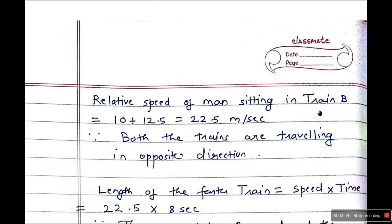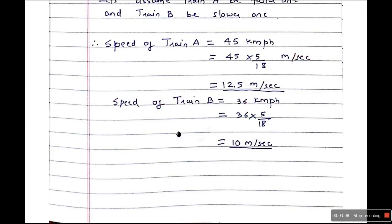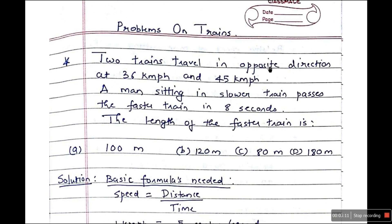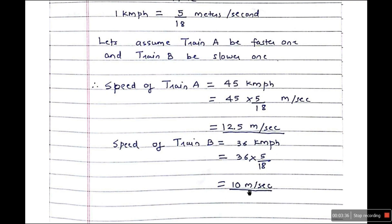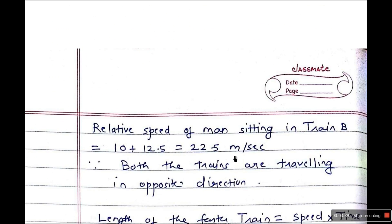Now the relative speed of the man sitting in train B — relative speed is the speed at which the man in train B is traveling relative to the first train — will be 10 plus 12.5. Both trains are traveling in opposite directions, meaning they move towards each other, so the relative speed adds up: train B's speed plus train A's speed traveling towards the man. So the relative speed is 22.5 meters per second.